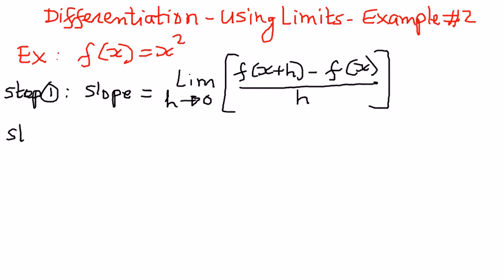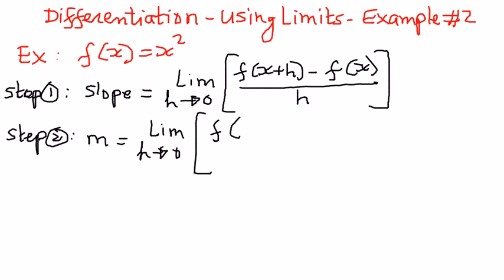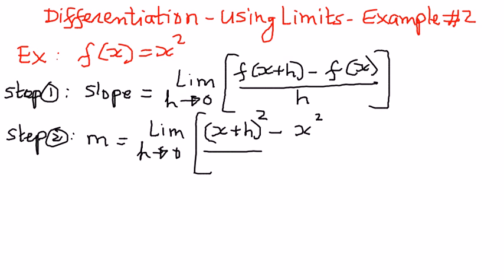As a second step, we're going to substitute the given function into this formula. So therefore, the slope, which is represented as m, we're going to write it out as the limit as h approaches 0 of x plus h, the whole squared, minus the given function x squared, the whole thing divided by h.